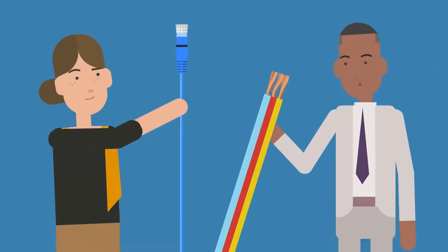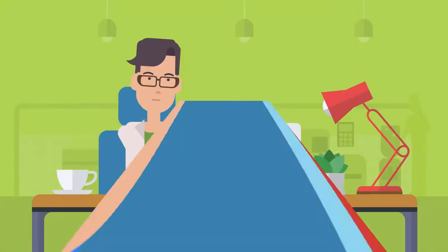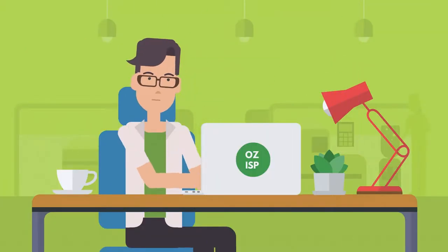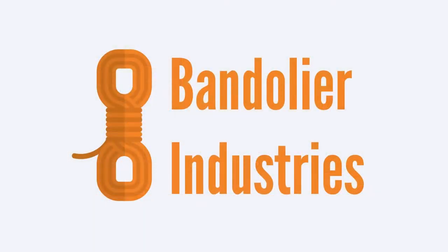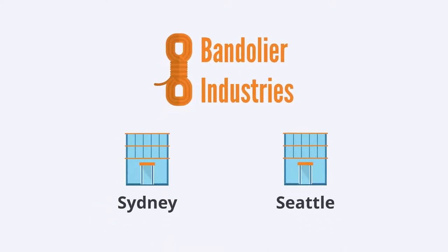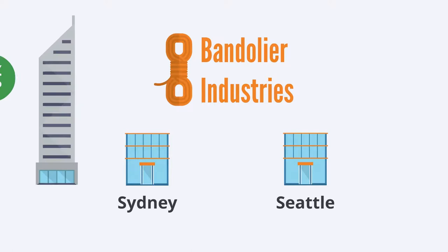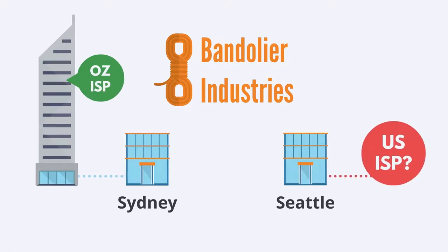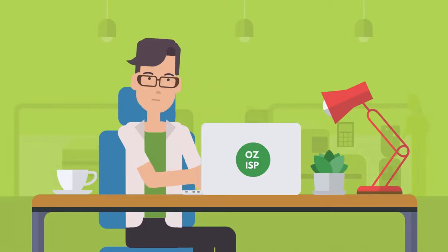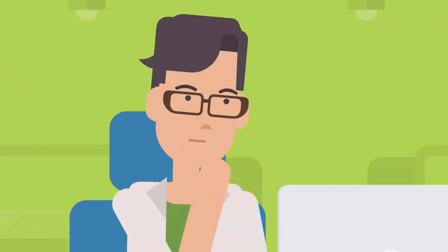Now that you're familiar with the benefits and drawbacks, how does it actually function? Imagine you work for an internet service provider in Australia and you've been asked to provide connectivity for a multinational company, Bandelier Industries. Bandelier's Sydney and Seattle locations will need to connect to a local central office. Your company can provide connectivity for Sydney, but Seattle will need to find its own local ISP. Behind the scenes, your company will connect the Seattle locations to your services — but first, you need to make some decisions.